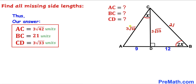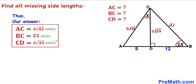We have now figured out all the missing sides: side AC is 3 times square root of 42 units, side BC is 21 units, and side CD is 3 times square root of 33 units. That's our final answer. Thanks for watching and please subscribe to the channel for more exciting videos.